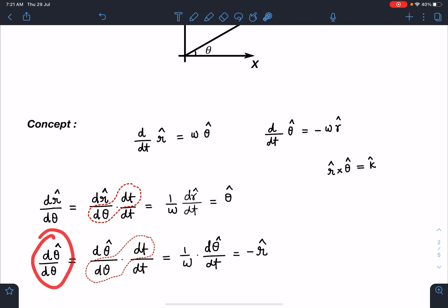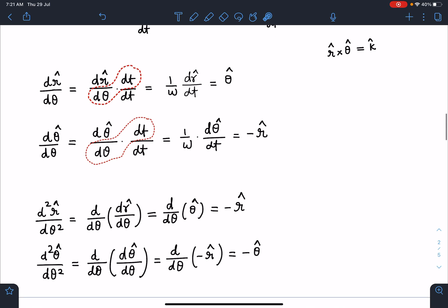Similarly, for d(theta cap)/dθ, doing the same substitution by multiplying and dividing by dt, it becomes minus r cap. I'm using the relation d(theta cap)/dt = -ω r cap. For the double derivative, following the same process, we get -r cap and -theta cap.